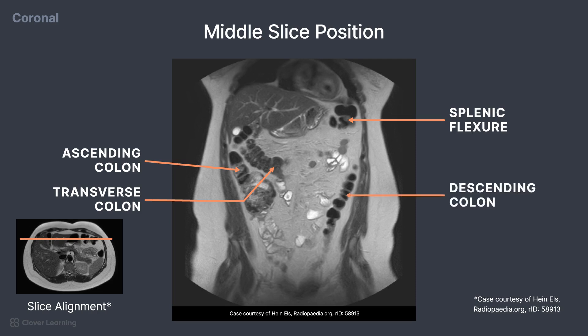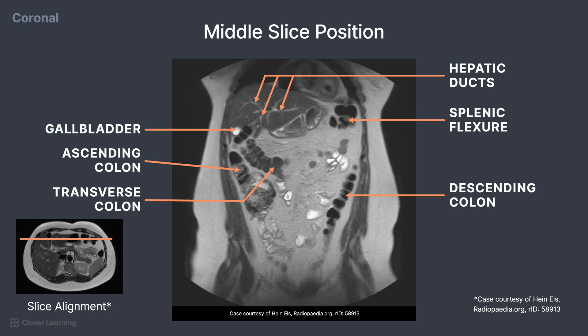In the liver, some of the hepatic ducts are visible as bright areas, and a small portion of the gallbladder is located towards the inferior portion of the liver.